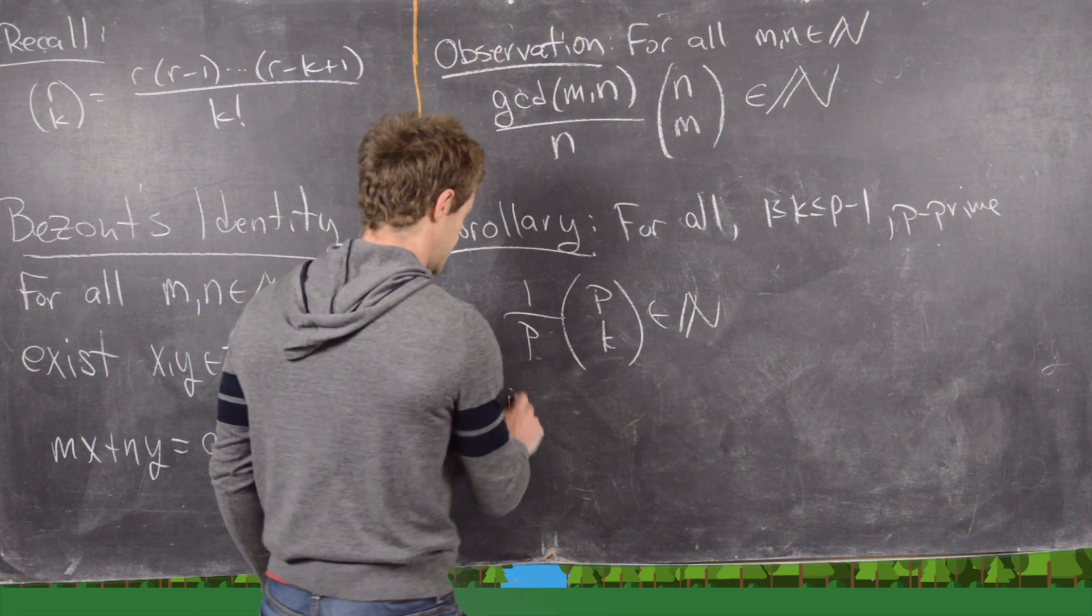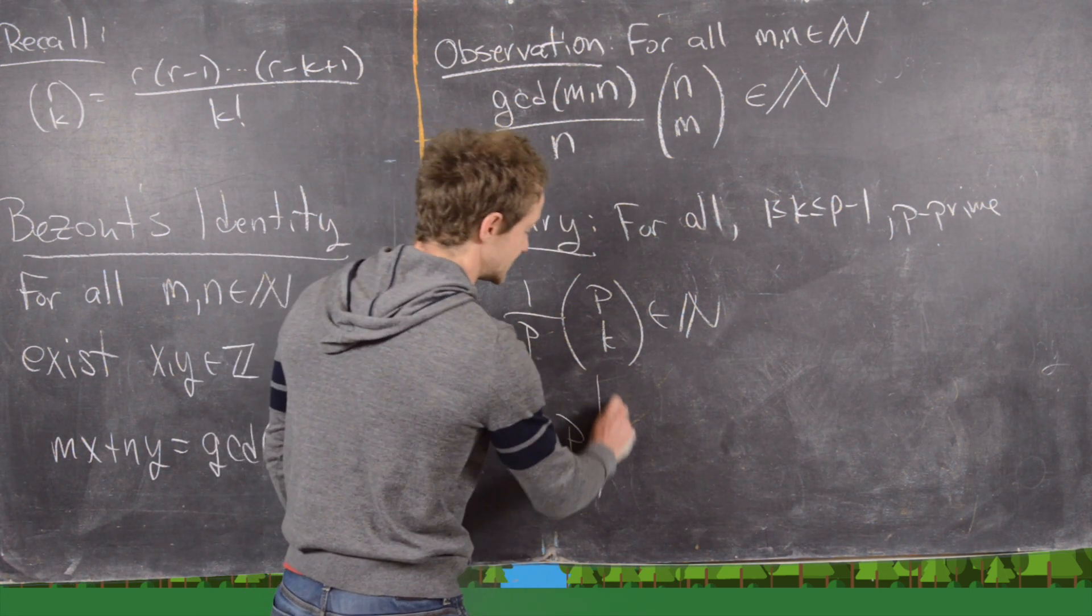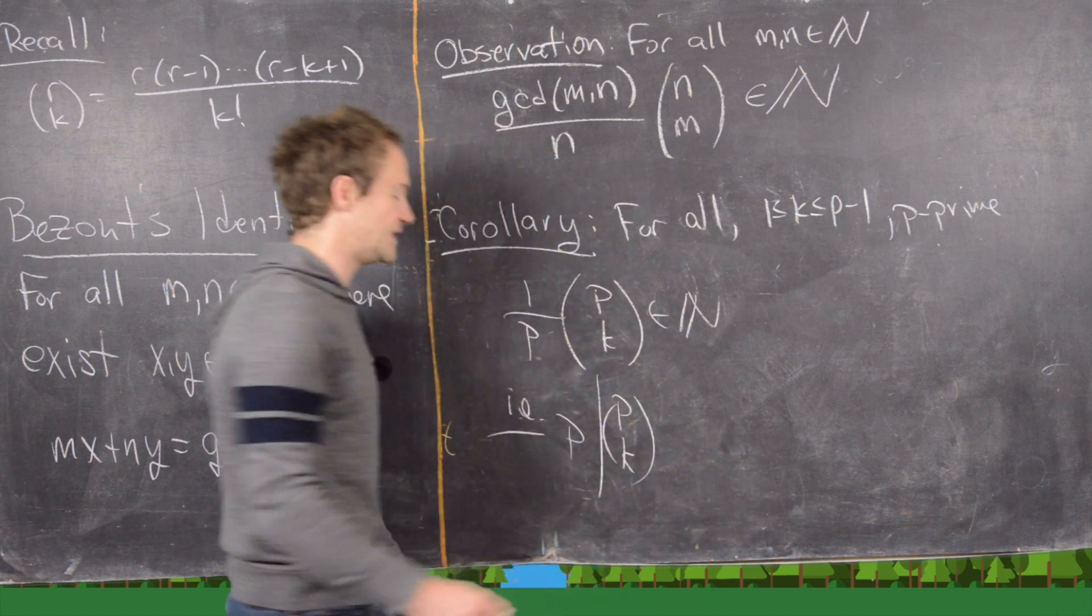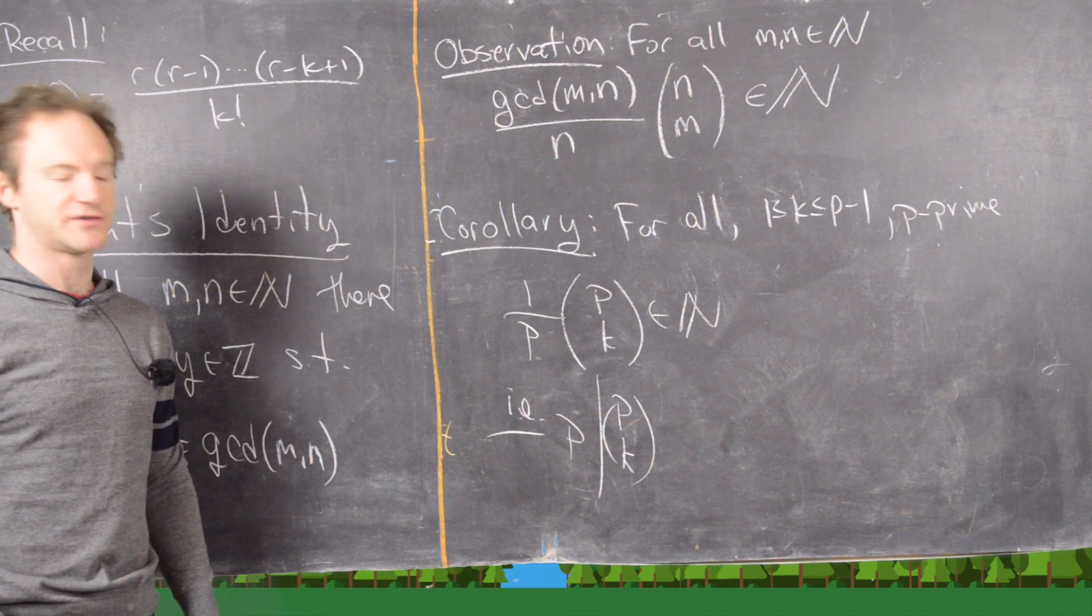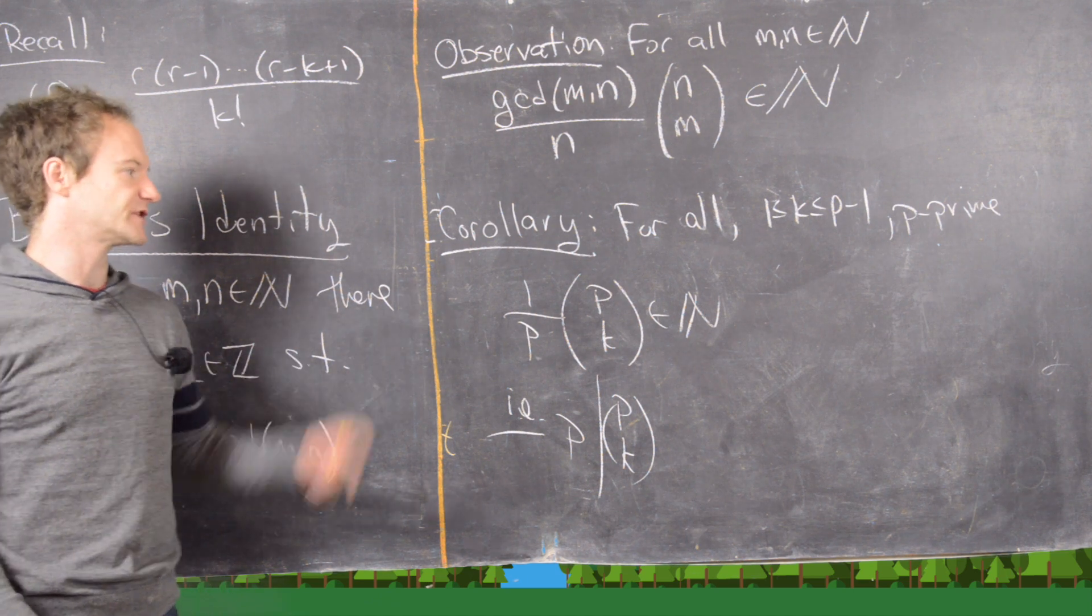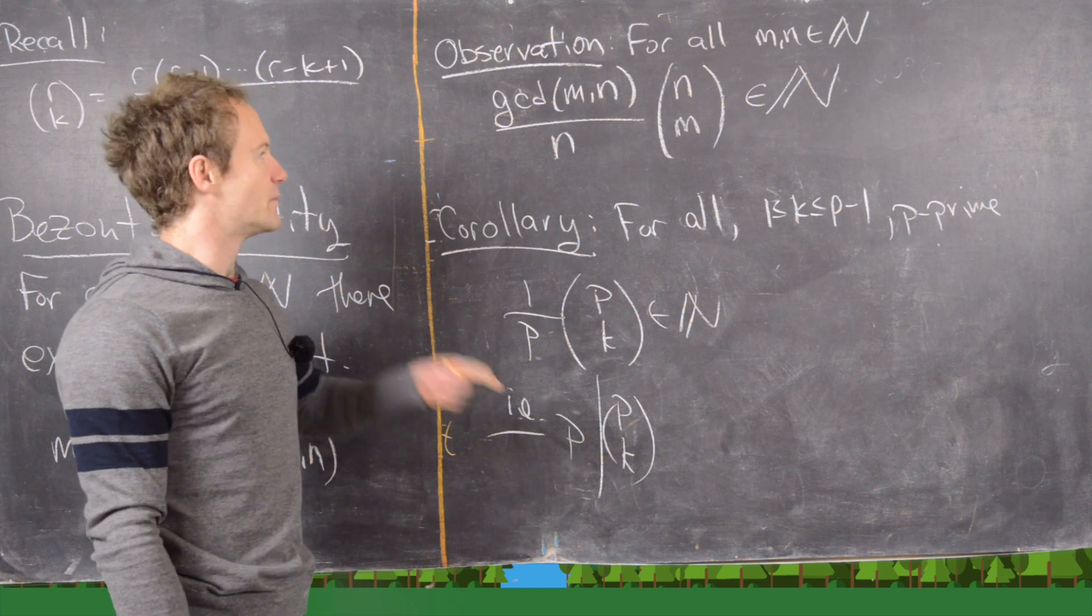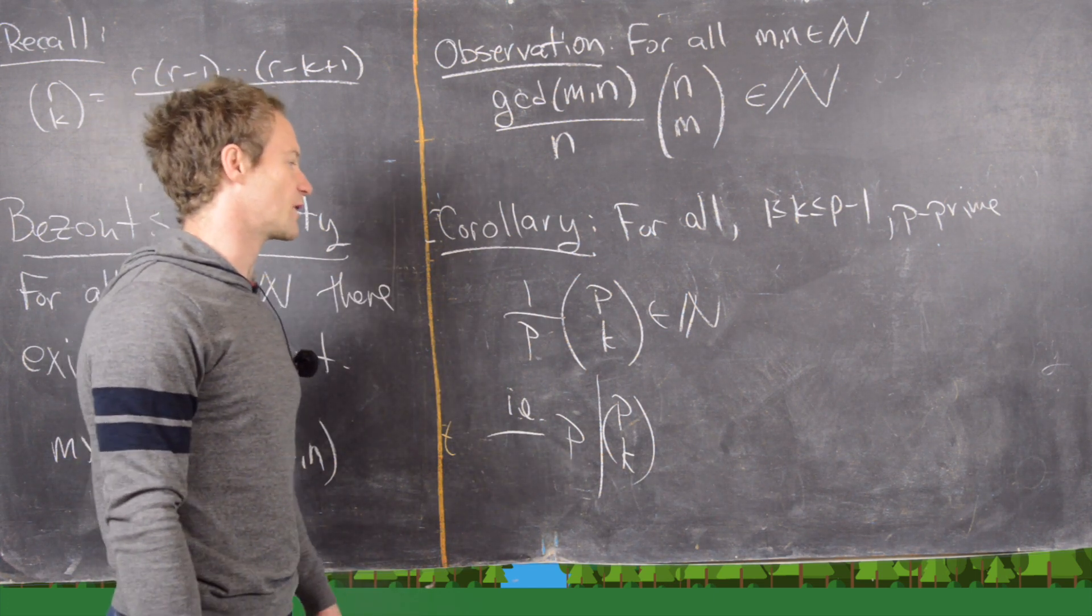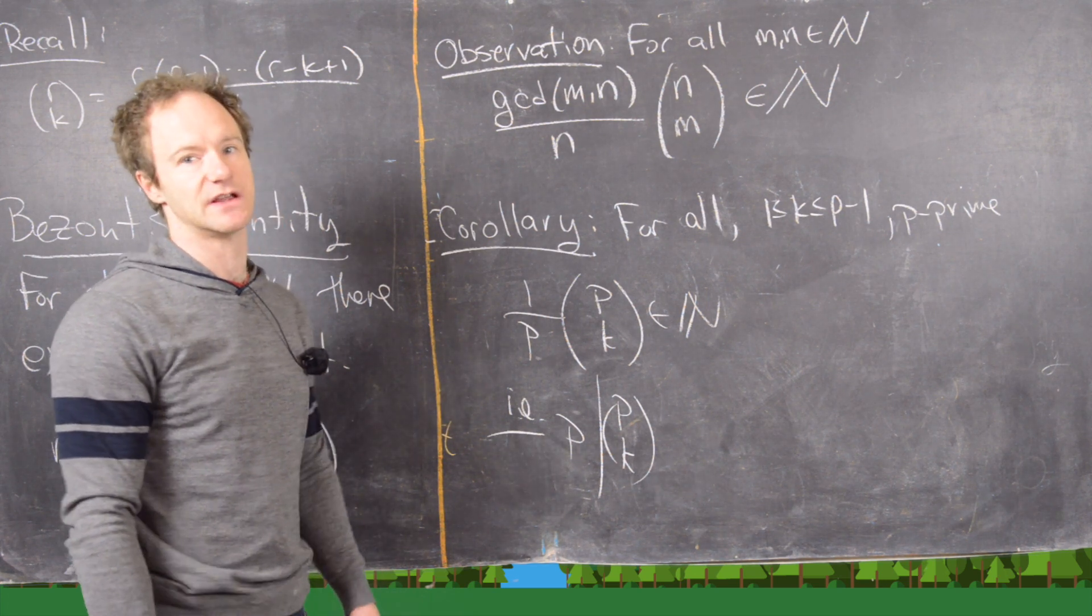In other words, i.e., p divides the binomial coefficient p choose k or p choose k is a multiple of p. So there's a bunch of ways to get this in the prime case, but I really like this as being a really simple corollary of this more general case. All right, that finishes this video.